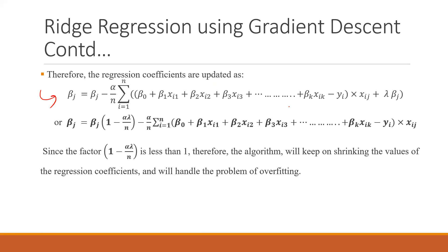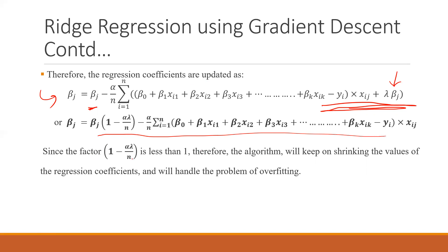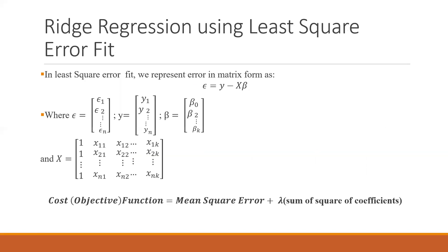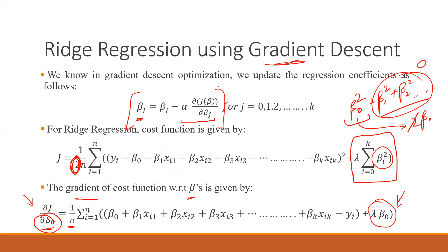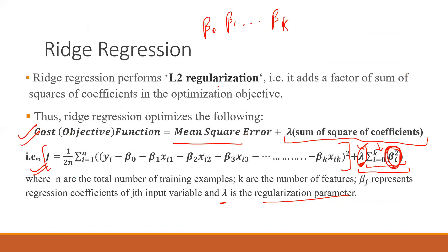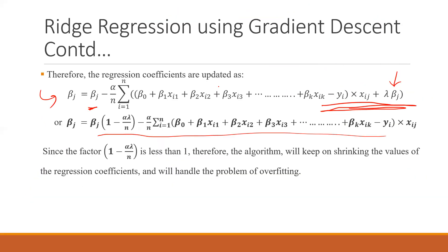The general update function for regression coefficients becomes: beta_j is updated using the gradient of the cost function. There are some changes on the right-hand side compared to simple linear regression. Beta_j can be factored out as a common factor. We have discussed three methods: mean square error, gradient descent, and now the least square error fit method.